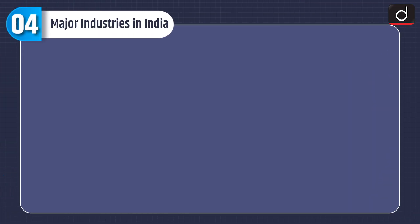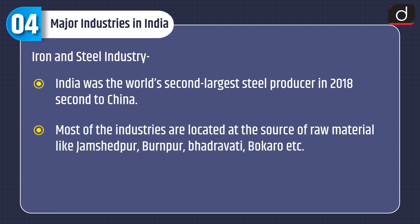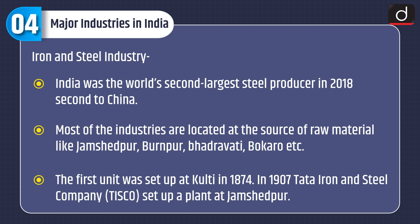Iron and steel industry: India was the world's second largest steel producer in 2018, second to China. Most of the industries are located at the source of raw material, like Jamshedpur, Bahanpur, Bhadravati, Bokaro, etc. The first unit was set up at Kulti in 1874. In 1907, Tata Iron and Steel Company set up a plant at Jamshedpur.